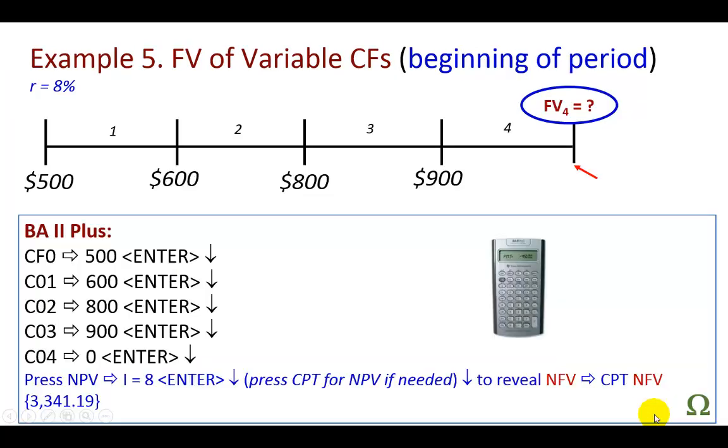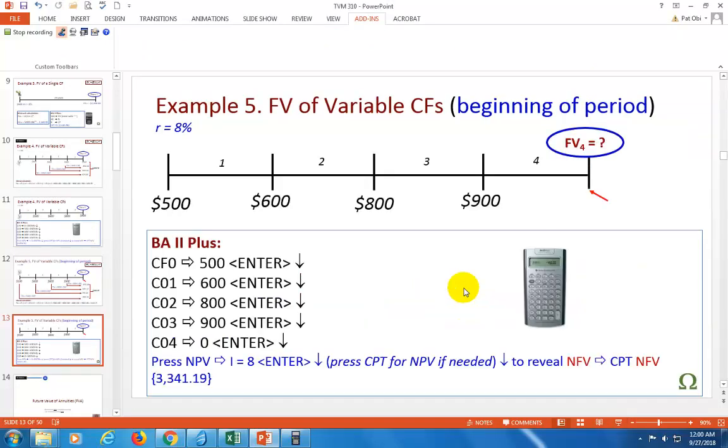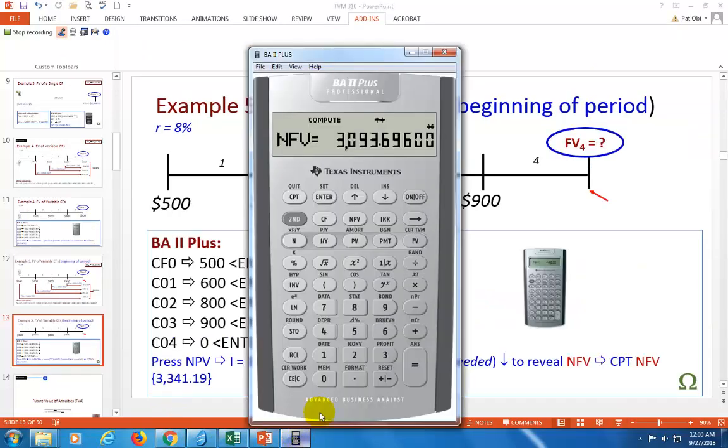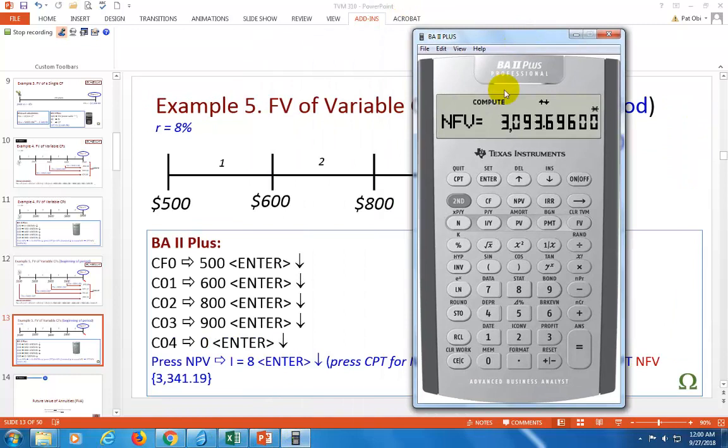It's more fun to go ahead and use the BA II Plus. Let's clear the screen, then hit CF. After we hit CF, second clear work. That clears up whatever we did previously. Let's go ahead and type in this 500 because we do have a cash flow at time zero. CF sub zero is going to be 500, enter.